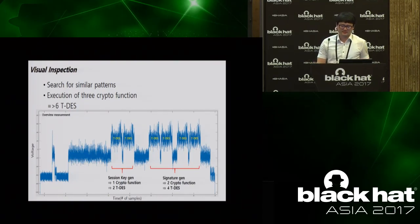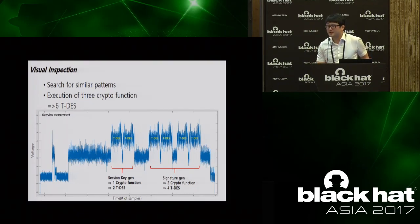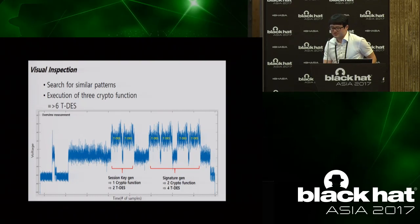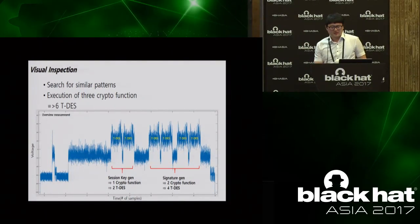Now about the experiments. From collected traces, we searched for a similar pattern and guessed whether triple-DES operates. This figure captures six triple-DES instances — as you can see, six similar patterns appear. This part is related to session key generation, and the right part is related to signature generation in the recharging protocol. For generation of the session key, triple-DES is operated twice, and for generation of the signature, triple-DES is operated four times.